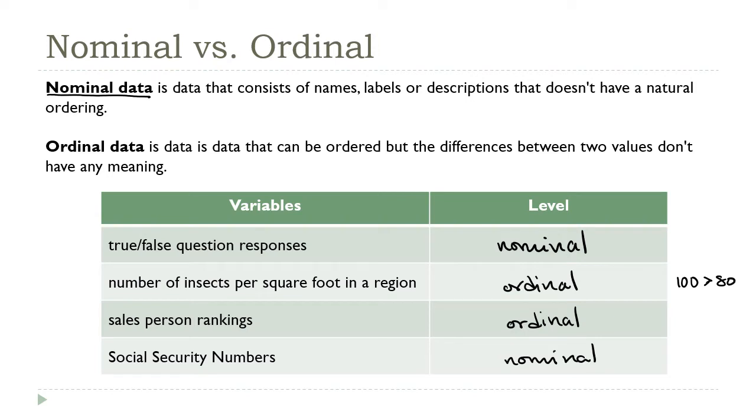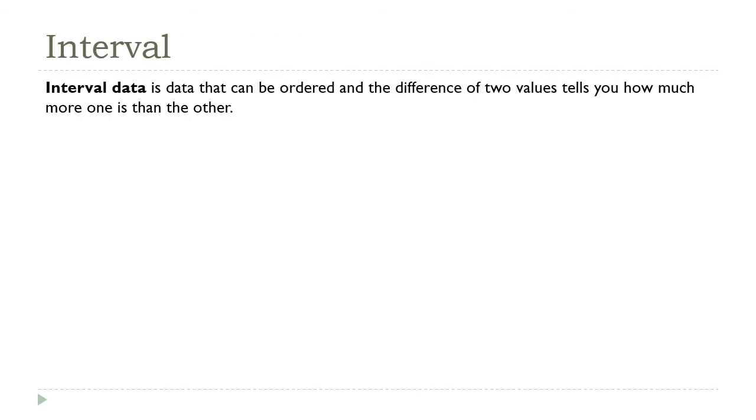When you're trying to distinguish between these two, the key question to ask is: does sorting the values tell me how one result compares to another one? If the answer to that is yes, then you have an ordinal variable. If it's no, then you just have a nominal variable.